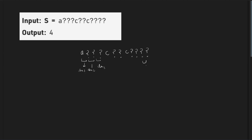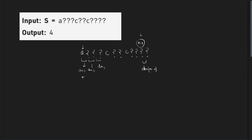So dx1 is the difference between positions 1 and 2, dx(n-1) is the difference between positions n-1 and n. If we take the summation of all these dx values, that sum should be as minimum as possible.